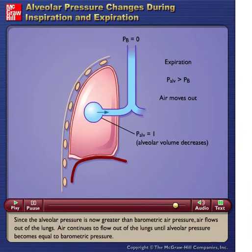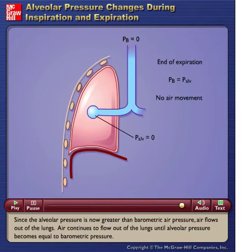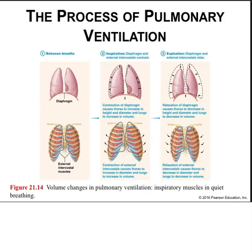Air continues to flow out of the lungs until alveolar pressure becomes equal to barometric pressure. Looking at the volume changes involved in ventilation, the main muscle of inspiration is the diaphragm, but it is also assisted by the external intercostals, as well as the sternocleidomastoid and the pectoralis minor, just to name a few. The idea is that with a constant volume of gas in the lungs, if we increase the volume, we decrease the pressure, creating a vacuum, and the air rushes in to fill the vacuum—thus inspiration takes place.